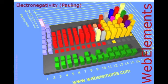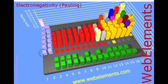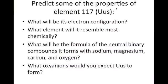Electronegativity is a very nice, predictable trend — lowest electronegativities are down at the bottom left, and highest is fluorine at the top right. Noble gases generally don't participate, but krypton and xenon are the only two noble gases that will bond, so they do have electronegativity values. Helium, neon, and argon will not bond and therefore can't have an electronegativity value. And that's all that I wanted to talk about.